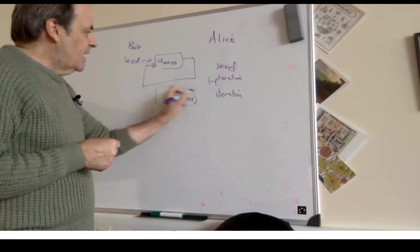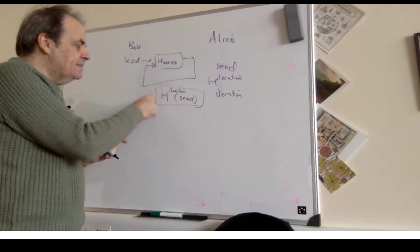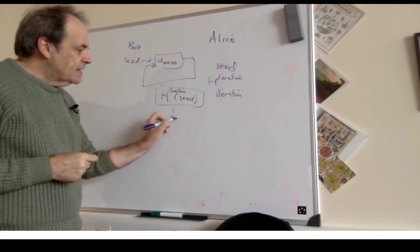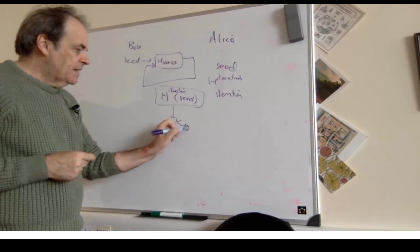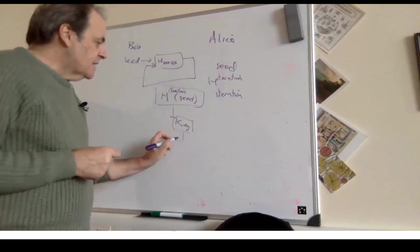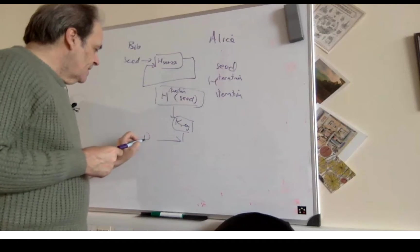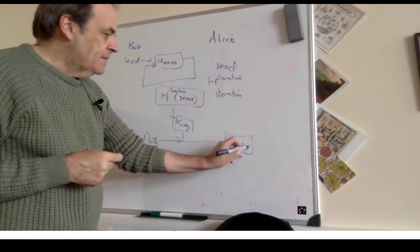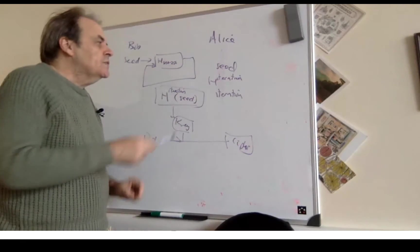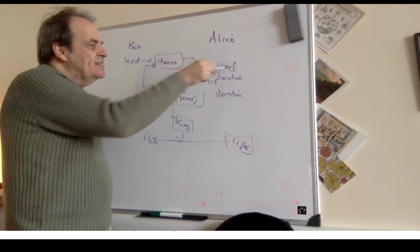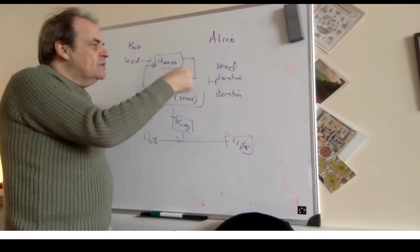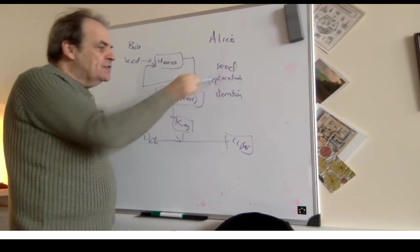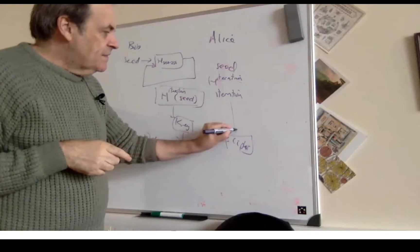We'll take the very last hash value and create an encryption key from there. With the encryption key we'll take our data and encrypt to create our cipher. Then Alice must take the seed, go through and hash that for the given number of iterations before she can find out the key.